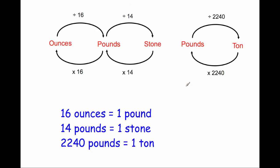I've created this diagram to help us with these questions. To go from stones into pounds, we times by 14 because one stone is 14 pounds. To go from pounds into ounces, we times by 16 because one pound is 16 ounces. To go backwards from ounces to pounds, we divide by 16, and to go from pounds into stones, we divide by 14. Since one ton is 2,240 pounds, to go from tons into pounds we times by 2,240, and to go from pounds into tons we divide by 2,240.